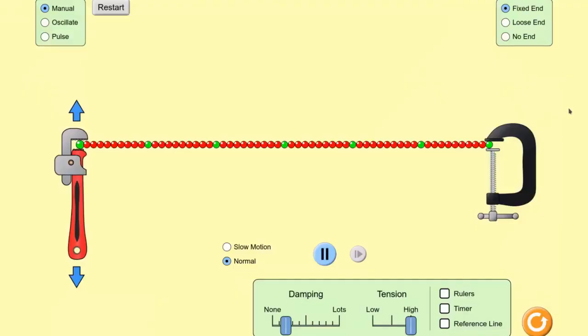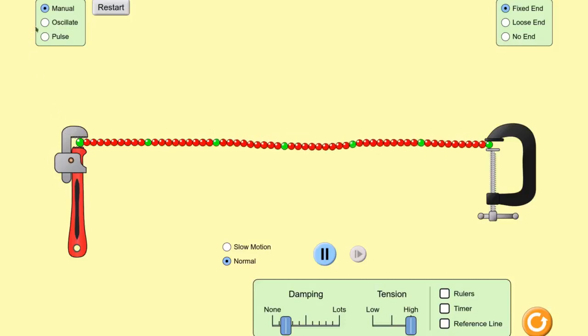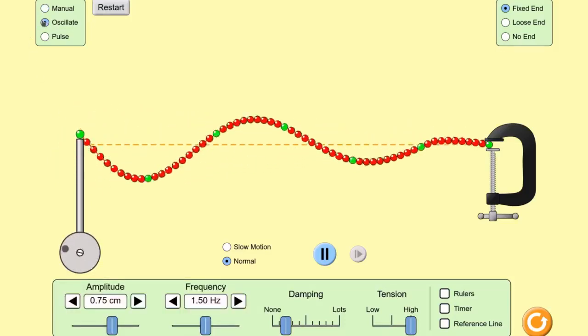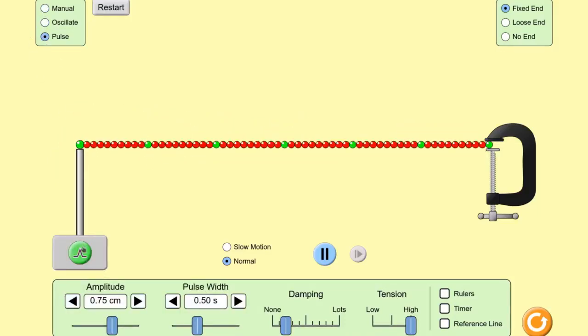This is our simulation. I'm including the link on YouTube below and you will also find it in the lab manual. So we have a string and we can move or wiggle its left end by various means. We can do it manually, set it to periodically oscillate, or trigger a single pulse.